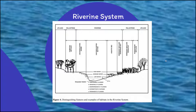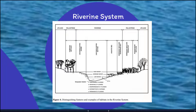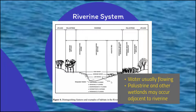Just to look at the graphics for these three different systems — this is an example of the riverine system. Note that there are specific types of plant life that are typically going to exist on either side of the riverine system and other wetland regions. You're going to have varying levels of water for the riverine system depending on what's contributing to that river system. Water flow is typically always going to be flowing, and palustrine and other wetlands may occur adjacent to these riverine systems as well.